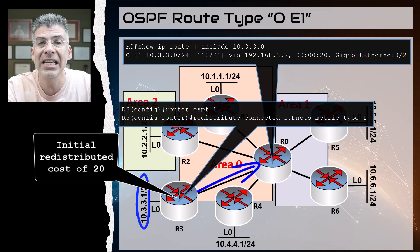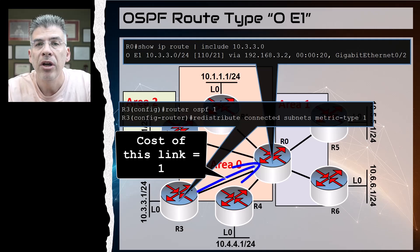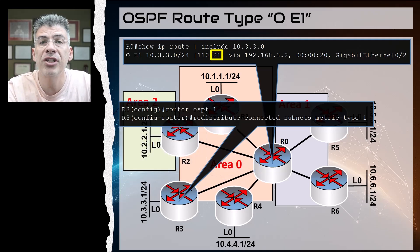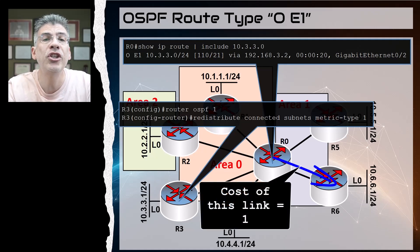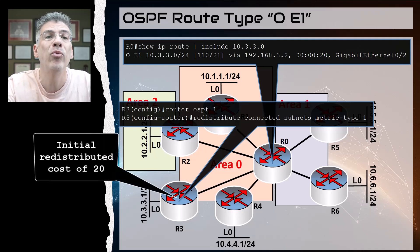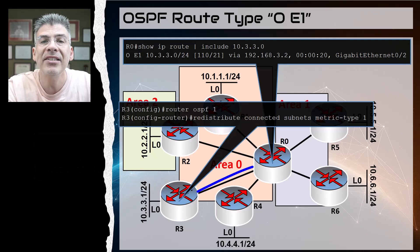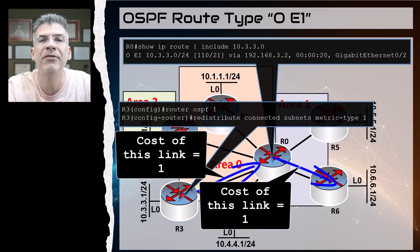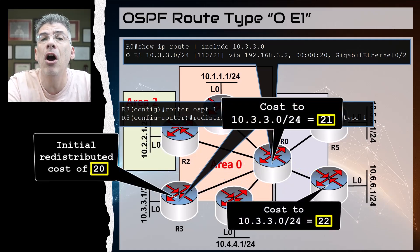When R0 receives it, it adds the cost of the internal link to reach R0, resulting in a cost of 21. If R0 then advertises this to R6, then in R6 we should see a cost of 22 in its routing table. So the cost to reach that network is the original cost assigned by the ASBR — in this case R3 — plus the cost of the internal OSPF topology to reach it. Each individual router in the topology will therefore have a different cost to reach that external E1 route.